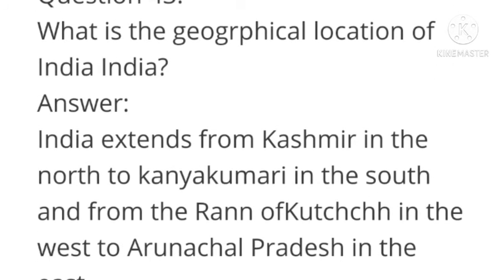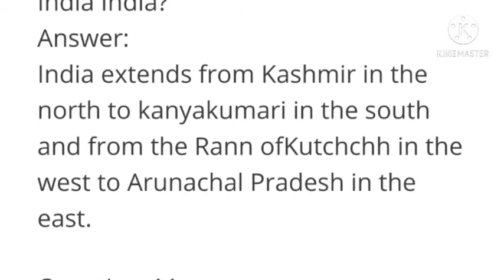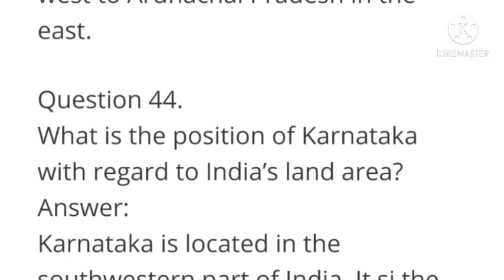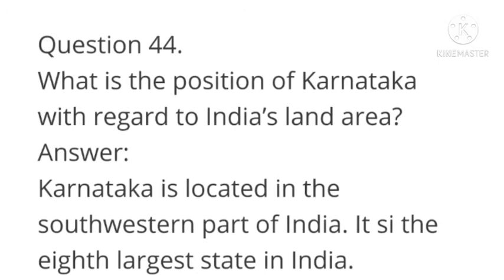What is the geographical location of India? Answer: India extends from Kashmir in the north to Kanyakumari in the south, and from the Rann of Kutch in the west to Arunachal Pradesh in the east. What is the position of Karnataka with regards to India's land area? Answer: Karnataka is located in the south-western part of India. It is the eighth largest state in India.